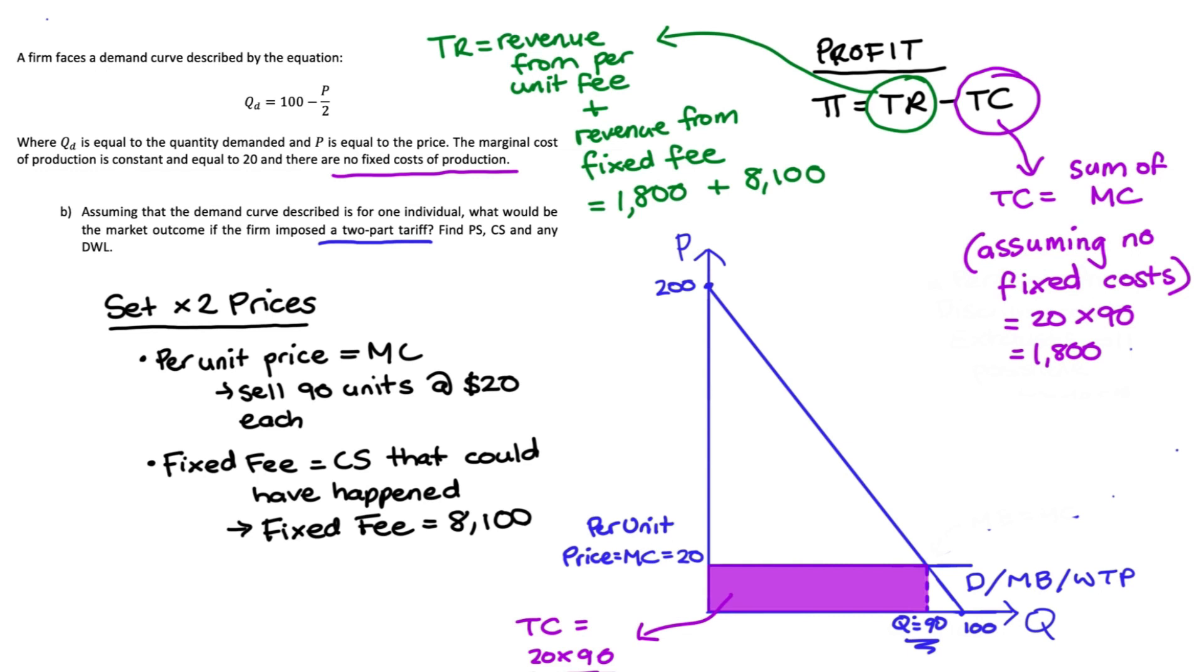So profit is going to be total revenue, which is 9,900 (that's the sum of 1,800 plus 8,100), minus our total costs, which is 1,800, so all equal to 8,100. Visually, it's going to be the difference between the green area (total revenue) minus the purple area (total costs), so the orange area.